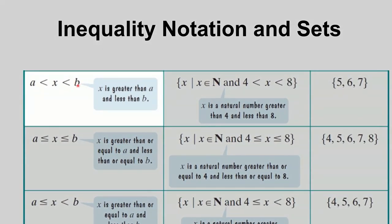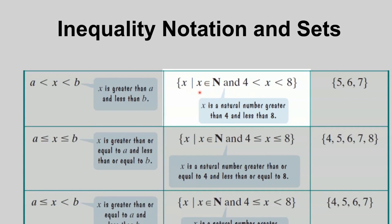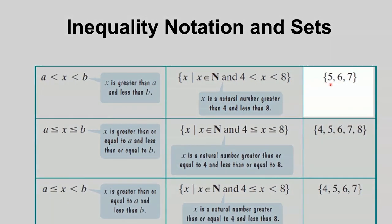If we see this compound inequality notation, you always start reading from the variable in the middle: x is greater than a and less than b. For example, the set of x such that x is in N and x is greater than 4 and less than 8 means x is a natural number greater than 4 and less than 8. So the elements are 5, 6, and 7.